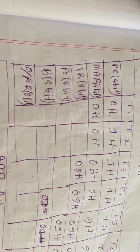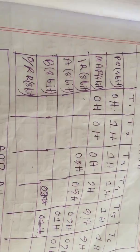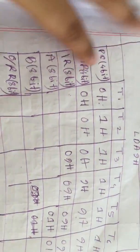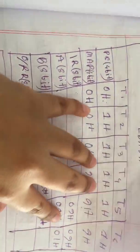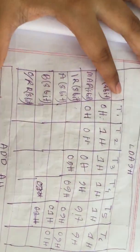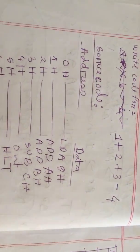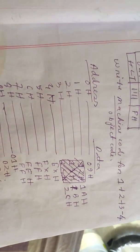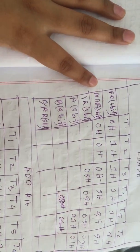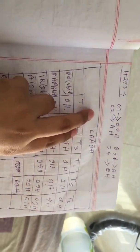Hello friends, welcome to my fourth part of this tutorial. In this part I will teach you how to do the variable machine cycles. If the question is given in this format, you have to fill up this box — T1, T2, T3, T4, T5 cycles will be given, and you have to write this portion. I will do it for the same question that I wrote source code and object code for.